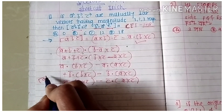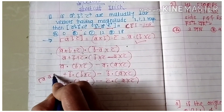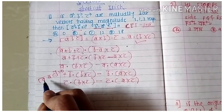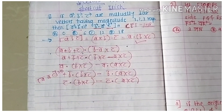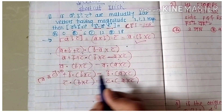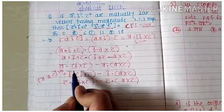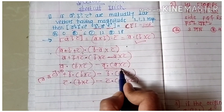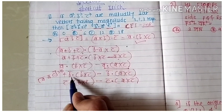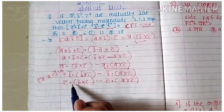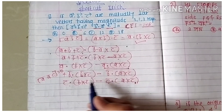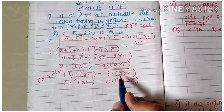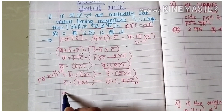We apply the property that the scalar triple product [ā, b̄, c̄] = 0 if any two vectors are identical — so [ā, ā, c̄] = 0, [ā, b̄, b̄] = 0, and [ā, c̄, c̄] = 0. Here ā·(ā × c̄) has ā repeated, b̄·(b̄ × c̄) has b̄ repeated, and c̄·(b̄ × c̄) and c̄·(ā × c̄) each have c̄ repeated — all these terms become zero.